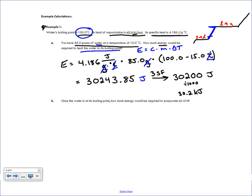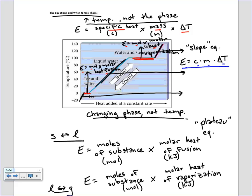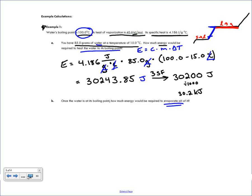Next part: once the water is at its boiling point, how much energy is required to evaporate all of it? This is no longer about changing temperature — we're changing phase. Looking at the phase change diagram, we're at a plateau, so we use the plateau equation: energy equals moles times the molar heat of vaporization.